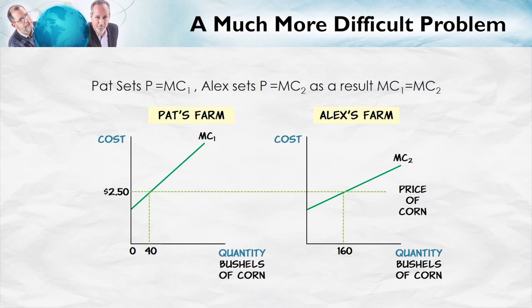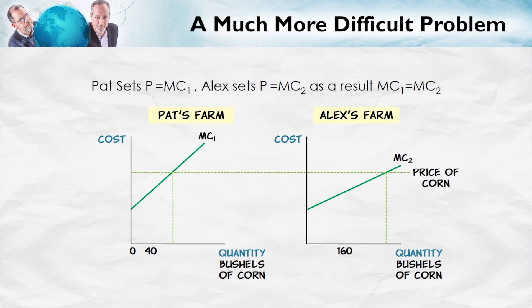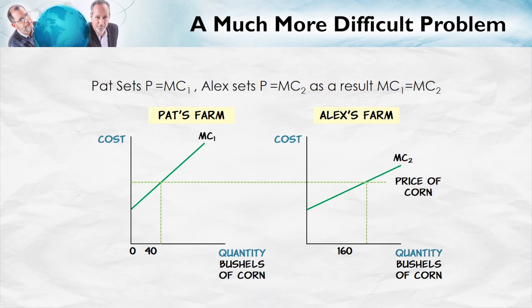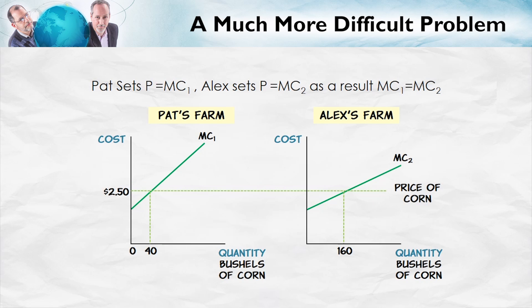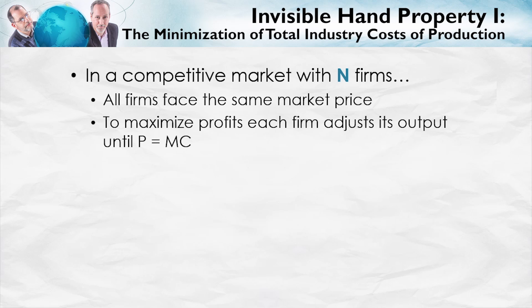Look at what happens when the price changes. As the price changes, so does the allocation of production across the two farms, in just such a way that total industry costs are minimized. This is truly a remarkable result — one that people might not even have suspected prior to the development of economics and the ability to see the invisible hand.